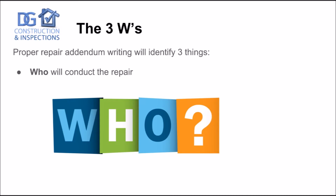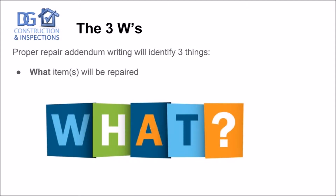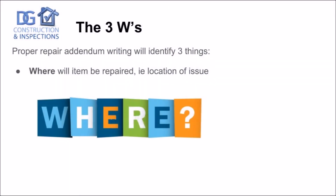Communicating the end result into a repair addendum is pretty easy, but it can also be easily messed up. We're going to go over three things to stick to when doing it. Proper repair addendum writing will identify three things: who will conduct the repair, what items will be repaired, and where the item will be repaired — i.e., the location of the issue.